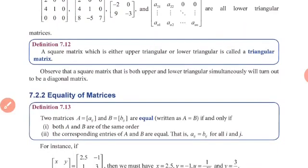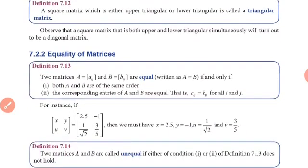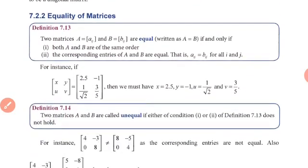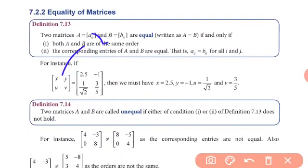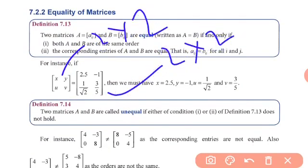When are two matrices said to be equal? Two matrices are equal if they have the same order and their corresponding elements are equal. For example, two 2×2 matrices are equal if they have the same order and all corresponding entries are equal.